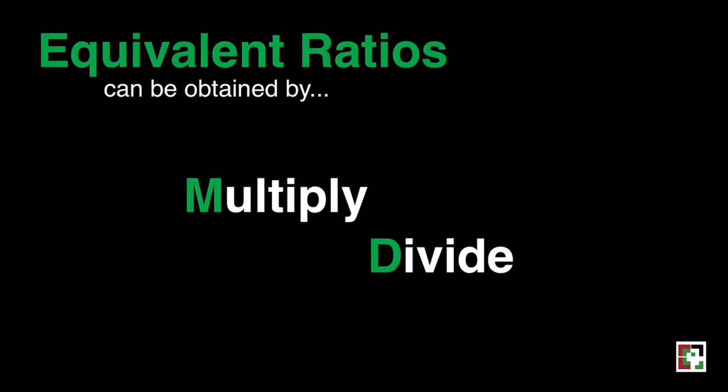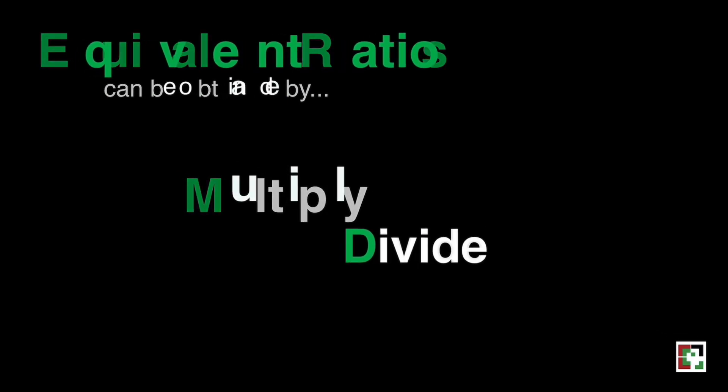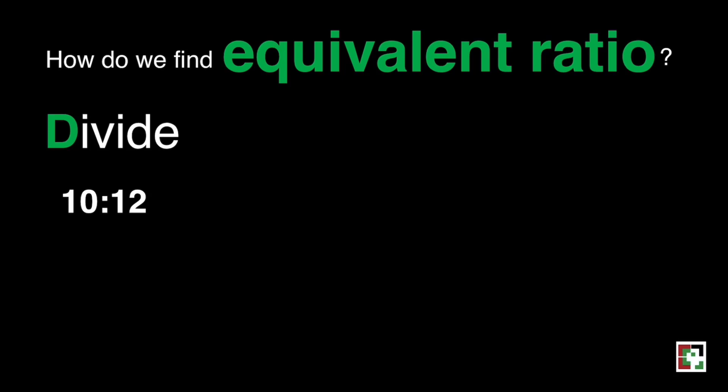As I mentioned a while ago, we have two ways. And the other one is division. We can use division in making or giving another equivalent ratio to our given ratio. Let's have 10 is to 12.